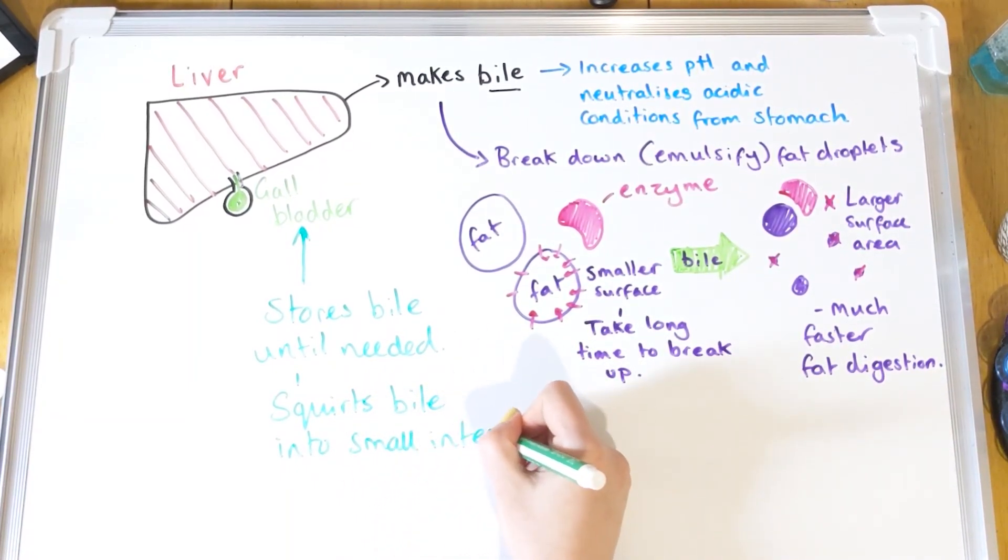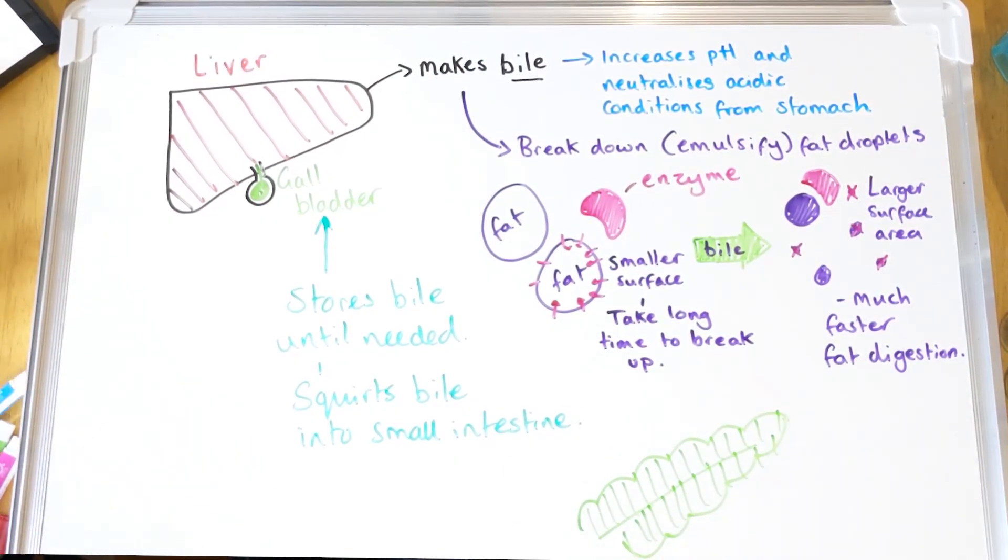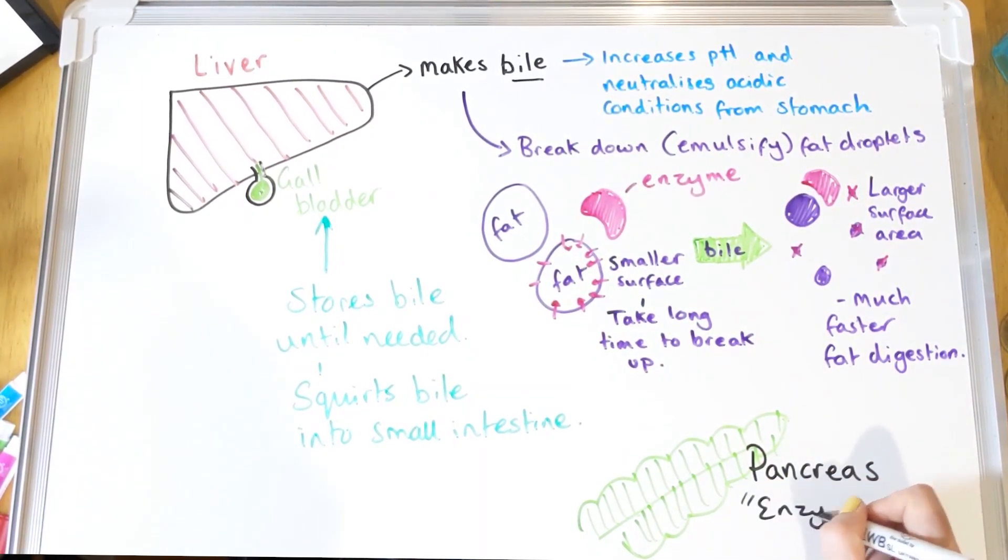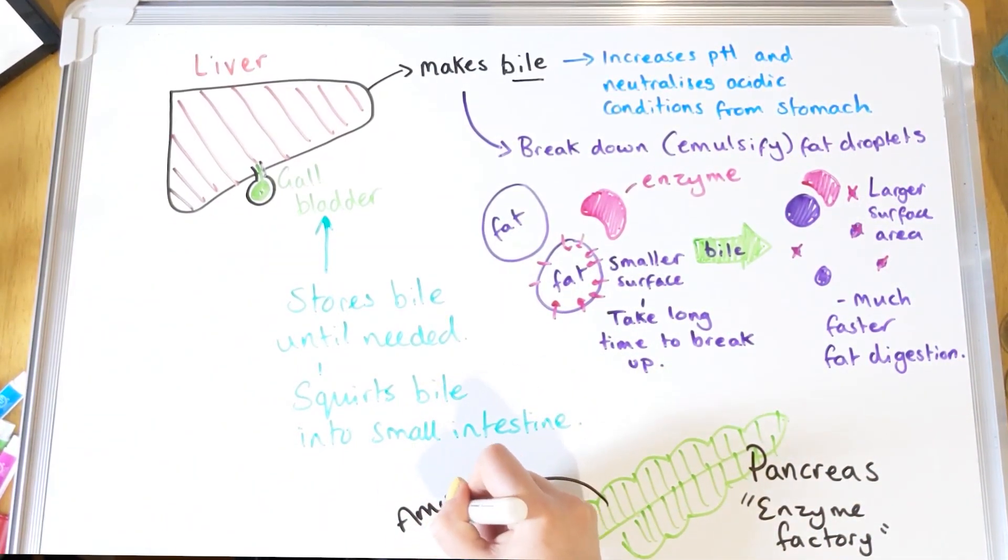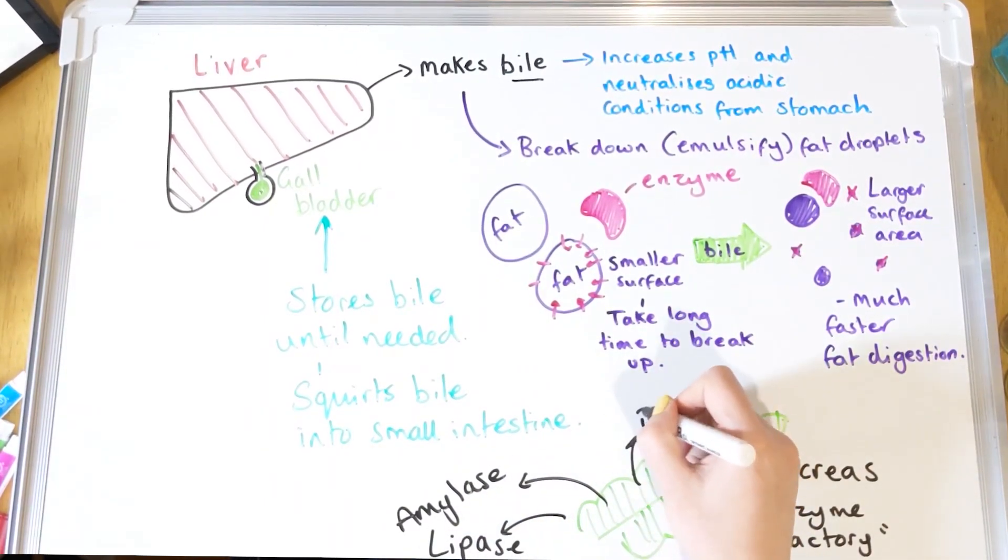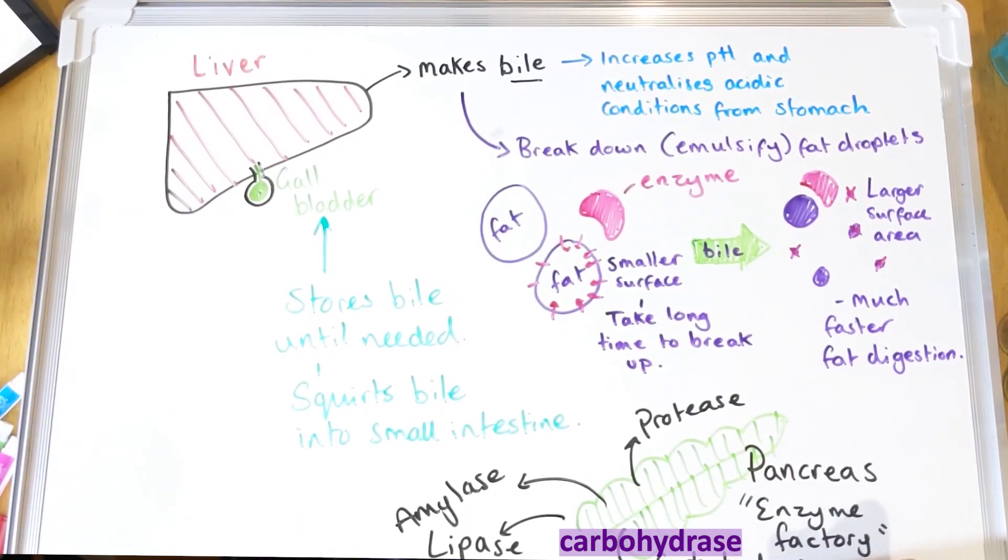Our last part of the digestive system we need to look at in a bit of detail is the pancreas. Now your pancreas I tend to call it the enzyme factory, because it makes all the enzymes that you need. It makes the amylase that's in your salivary glands, it makes another type of amylase that's in your small intestine but we often call this carbohydrases, it makes the lipase that breaks down fat, it makes the protease that breaks down protein. It makes them all. It also makes other stuff, but that's for another topic.